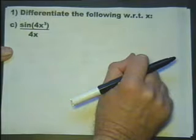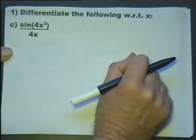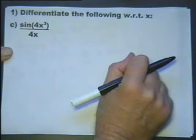Differentiate the following with respect to x. This is actually part c, question 1 part c. Let's do this with the quotient rule.